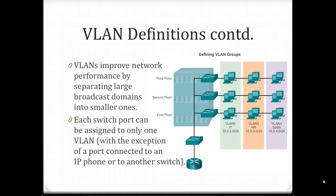Separating our traffic helps us improve our network performance by creating smaller broadcast domains. In this example we have three VLANs: VLAN 2 for IT, VLAN 3 for HR, and VLAN 4 for Sales. The VLAN 4 for Sales would only be able to send broadcast messages within that particular VLAN. If a broadcast message was sent on this network, it would not be sent over to the HR VLAN or to the IT VLAN. They are all separate.